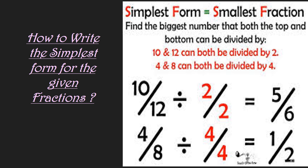Here is a shortcut for the simplest form: find the biggest number that both the top and bottom can be divided by. For example, 10 and 12 are both even numbers so they can both be divided by 2: 10/12 ÷ 2/2 = 5/6. Since 5 and 6 have no common factor, 5/6 is the simplest form. For 4/8: both have common factor 4, so divide by 4/4 to get 1/2. That is the simplest form of 4/8.